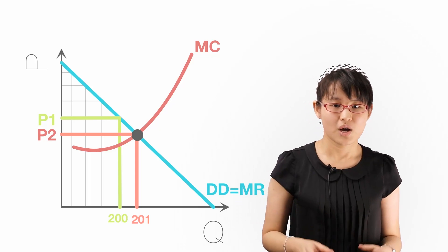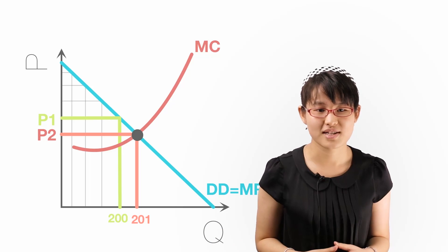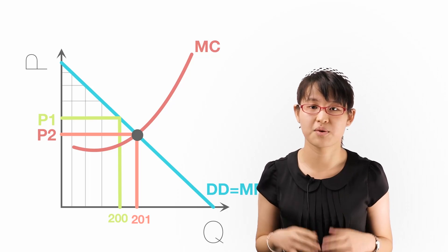Now the question is, what is the consumer surplus in first degree price discrimination? Since all consumers are charged the maximum price they are willing to pay, which is equal to their utility from consumption, the firm has actually captured all the consumer surplus.